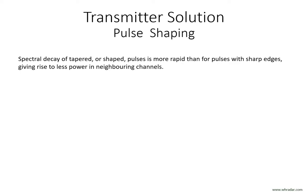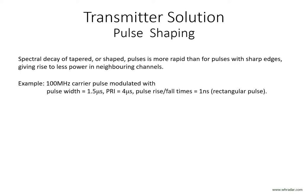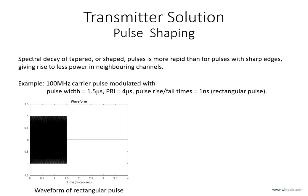The traditional approach to minimising the spectral spread of a pulsed radar waveform into neighbouring channels is pulse shaping. Let's start by considering rectangular pulses — that is, pulses having a very rapid rise and fall time. Ideally, the rise and fall times should be infinitely fast for perfectly rectangular pulses, but this is not practical. On the left we see one cycle of a waveform of a 100 MHz carrier having a PRI of 4 microseconds and pulse width of 1.5 microseconds. The rise and fall times of the pulses are both 1 nanosecond. We cannot resolve the sine wave variation at 100 MHz and so the pulse appears as a solid black region.